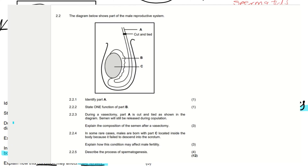So here we are given question 2.2. The diagram below shows a part of the male reproductive system. If you do not understand concepts surrounding the male reproductive system, I strongly recommend you watch my video on it. You can see this is part of the male reproductive system, considering that there is this ball-like structure.